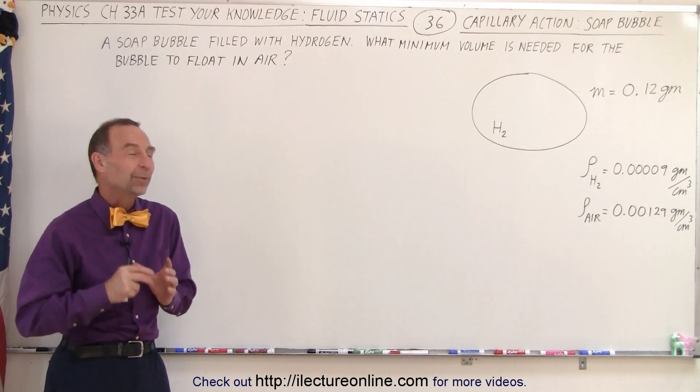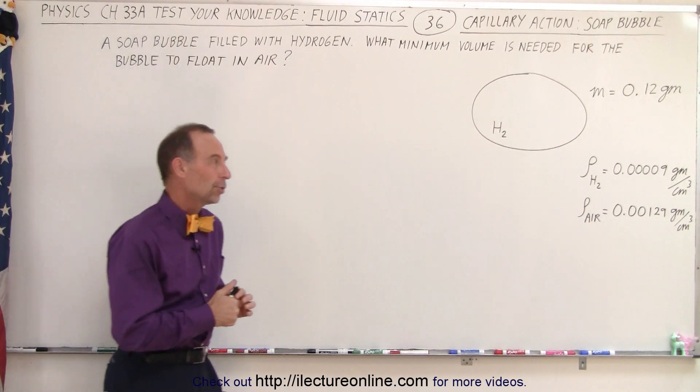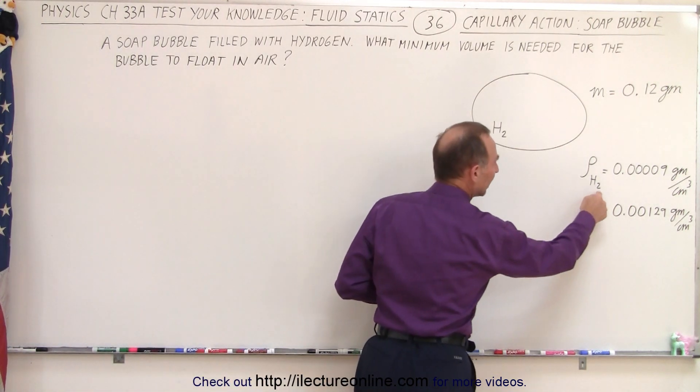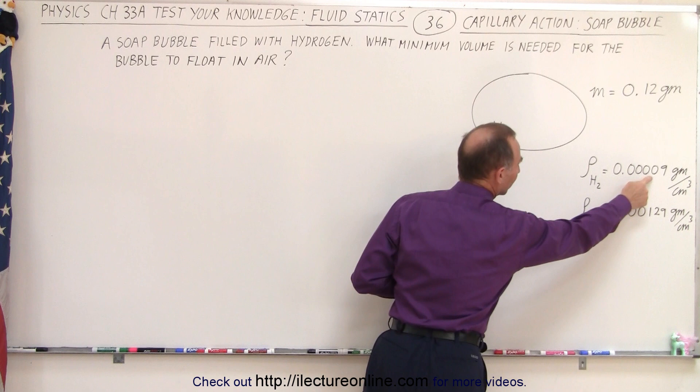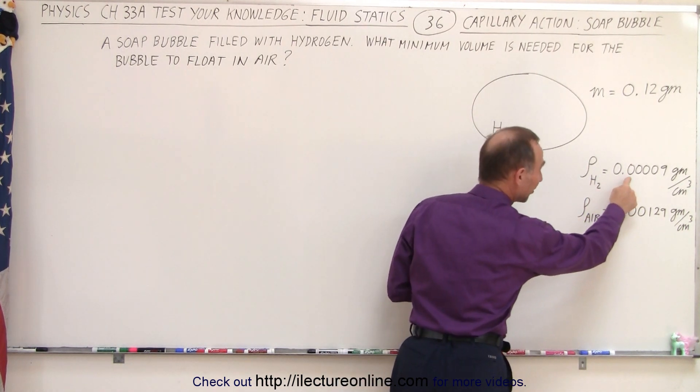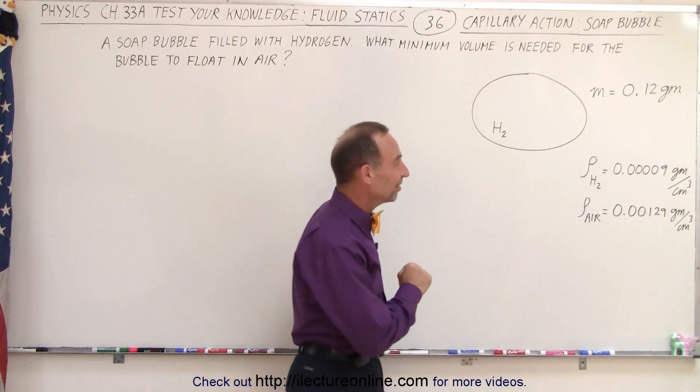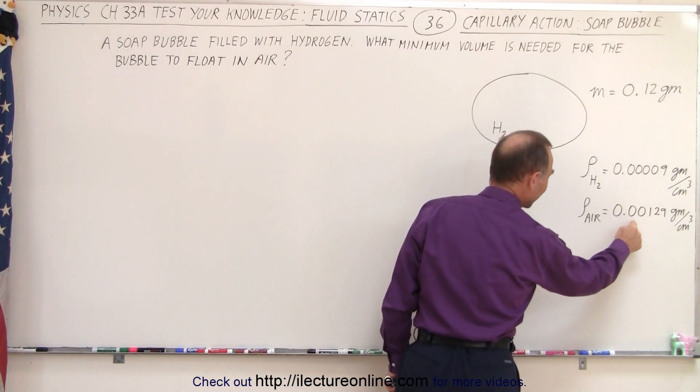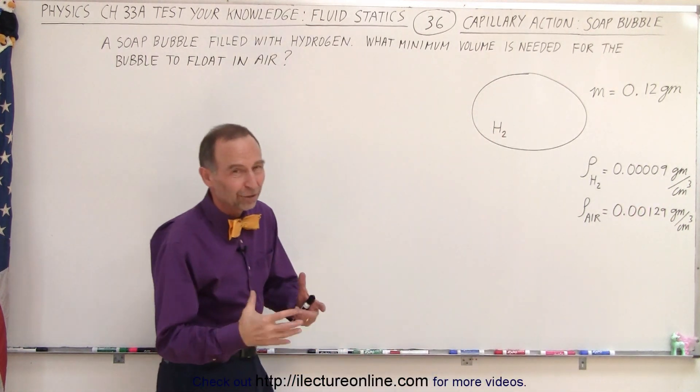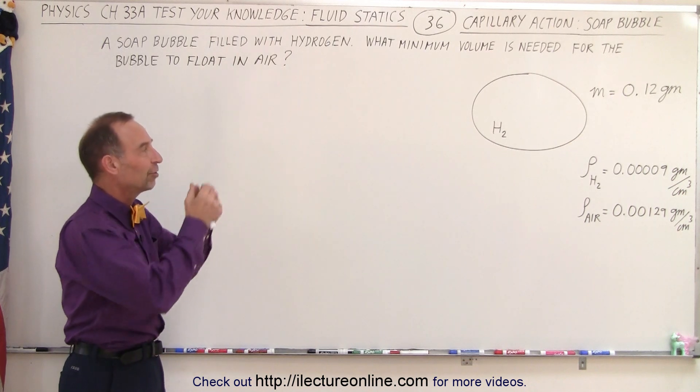Then what would the volume of that bubble need to be in order for it to float in air? And notice the density of hydrogen is 0.00009 grams per cubic centimeter, and the density for air is 0.00129 grams per cubic centimeter. So obviously hydrogen is less dense than air and it should therefore float.